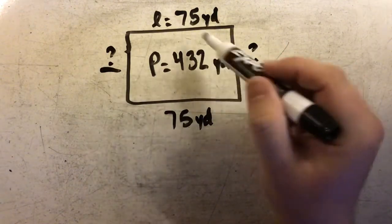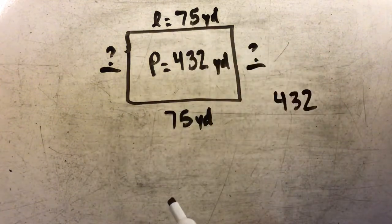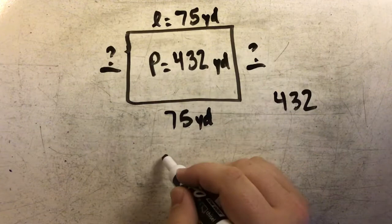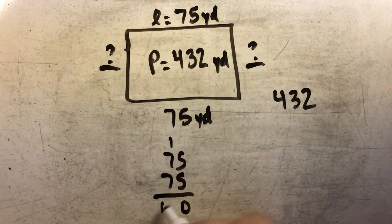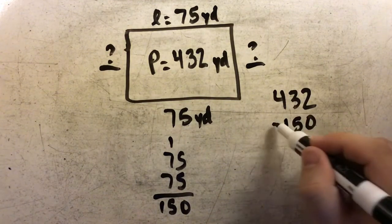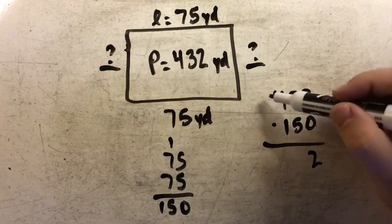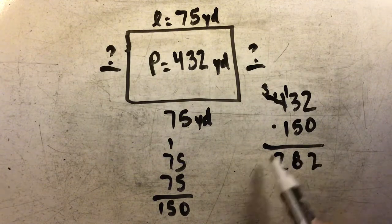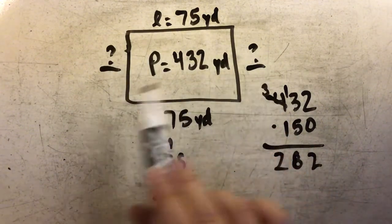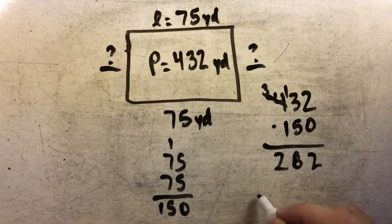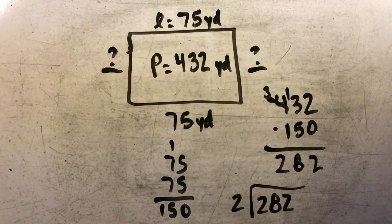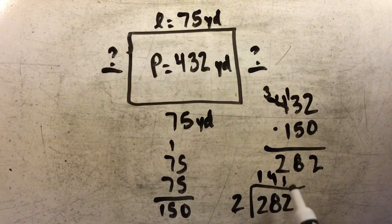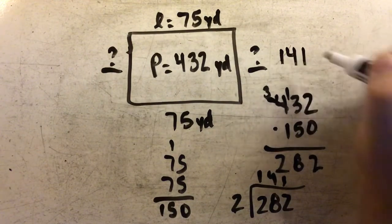In order to do that, I'm going to subtract from my total perimeter of 432. I'm going to subtract 75 and 75. Before I subtract, I'll add those two together to make it a little easier: 75 plus 75 gives me 150. So 150 taken from 432: 2 minus 0 is 2; 3 minus 5 I can't do, so I need to regroup — 13 minus 5 leaves me with 8; and then 3 minus 1 leaves me with 2. But again, 282 is the length of both sides. So to find just one side, I divide by 2: 2 goes into 2 once, 2 goes into 8 four times, and 2 goes into 2 once. So my missing length is going to be 141 yards.